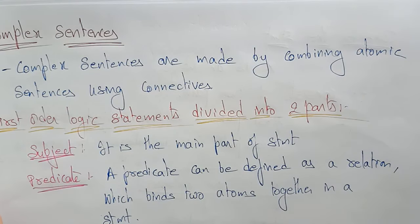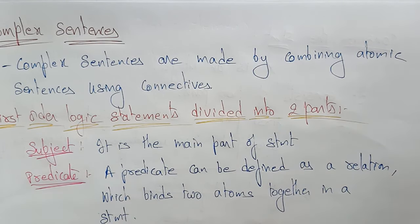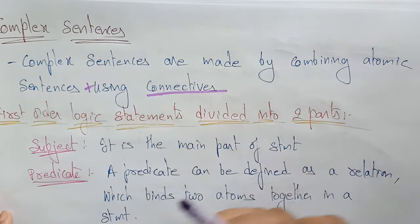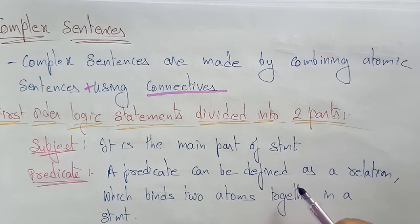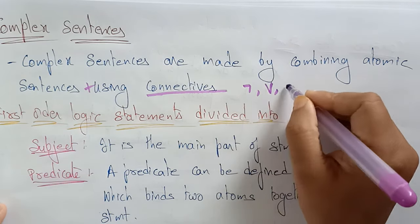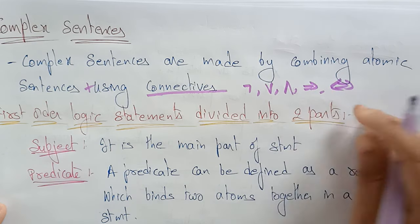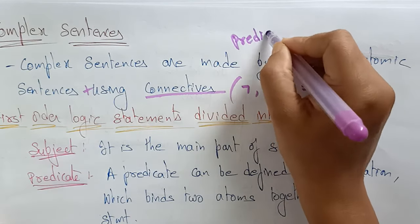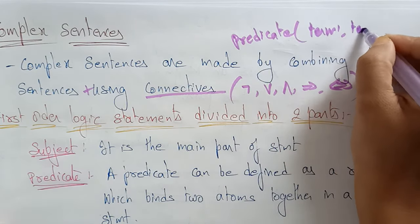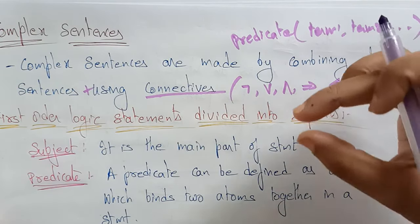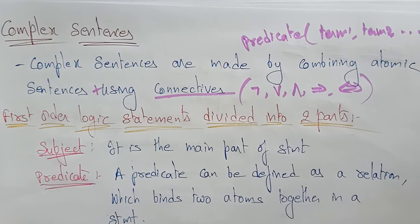Now let's see complex sentences. Complex sentences are made by combining atomic sentences using connectivities. The basic elements of first-order logic include constants, predicates, functions, quantifiers, and connectivities. Connectivities are: negation, OR, AND, implies, and biconditional. So a complex sentence is just a combination of atomic sentences — predicate with terms — joined using these connectivities. When you use connectivities to represent atomic statements, the result becomes a complex sentence.